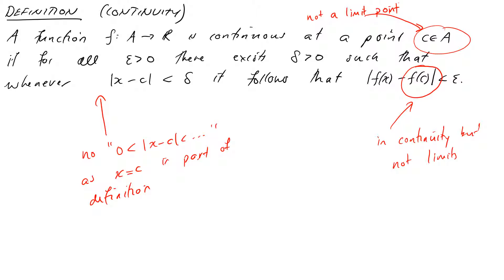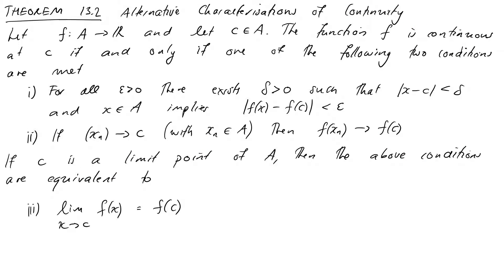So there's our definition. It's worth writing this down alongside the limit definition and being really clear on what the different pieces are and how you can tell one from the other. Just like with limits, we have two different characterizations of continuity: one involving epsilons and deltas, which is this one, and one involving sequences. One formulation may be more or less useful than the other depending on what you're trying to show.